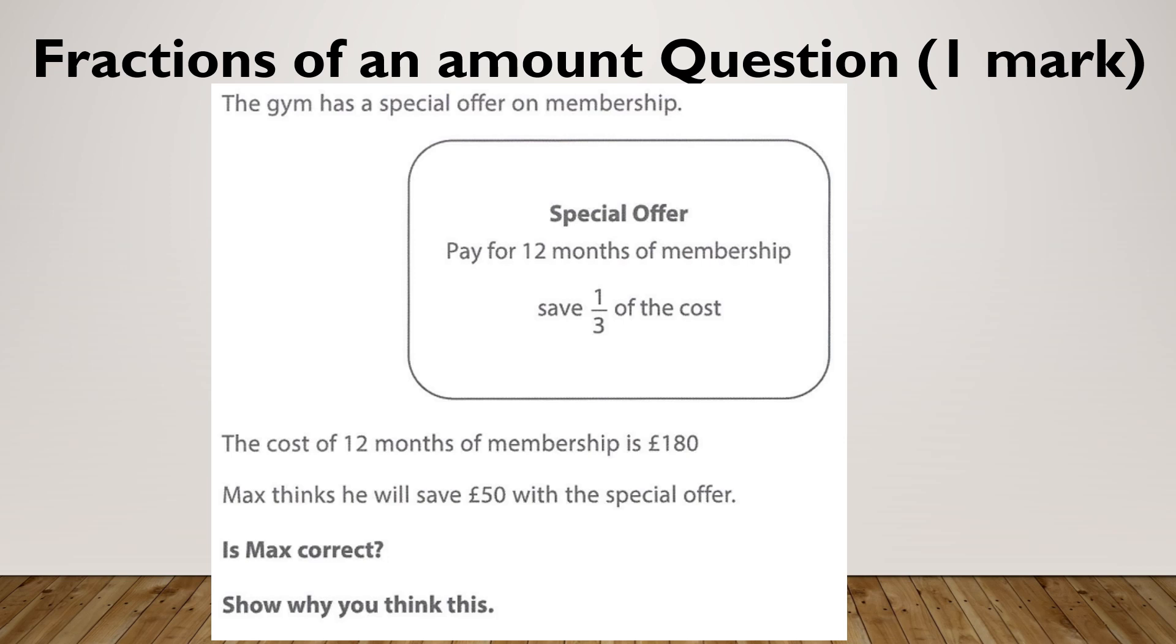Let's do one more. The gym has a special offer on its membership. So pay for 12 months of membership, save a third of the cost. The cost of 12 months of membership is £180. Max thinks he's going to save £50 with his special offer. Is Max correct? Pause and give it a go, please.